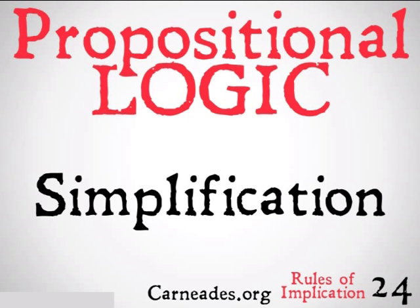With conjunction, we took two separate premises and conjoined them with an ampersand, with a conjunction operation. With simplification, we're going to take a premise that has that conjunction symbol in it and split it up into its two component parts. Let's take a look at some examples.